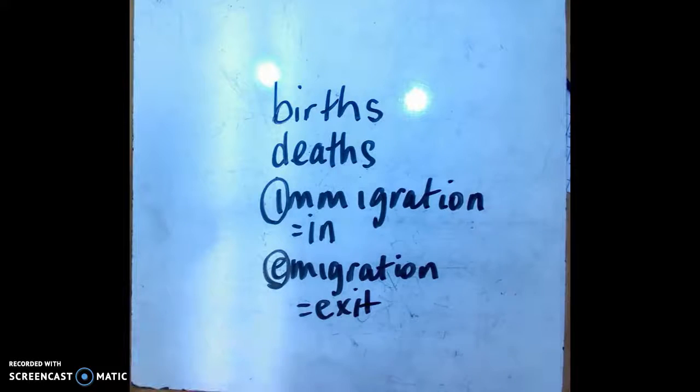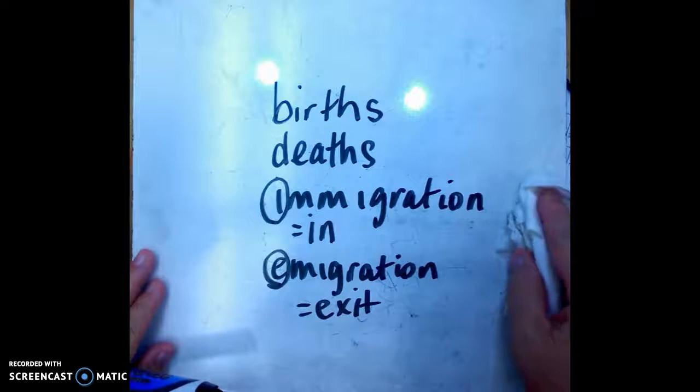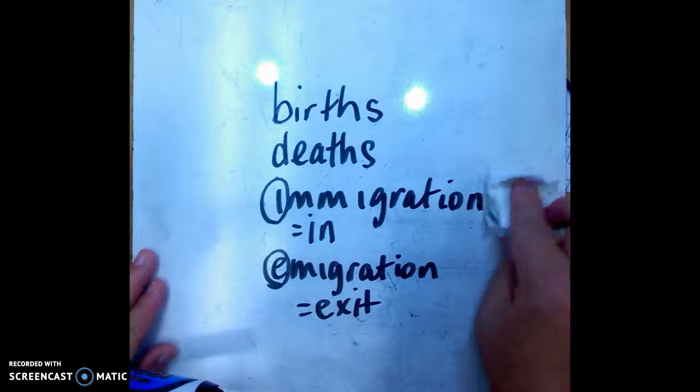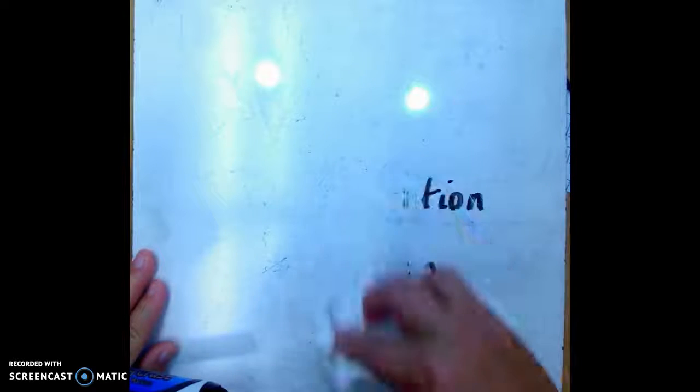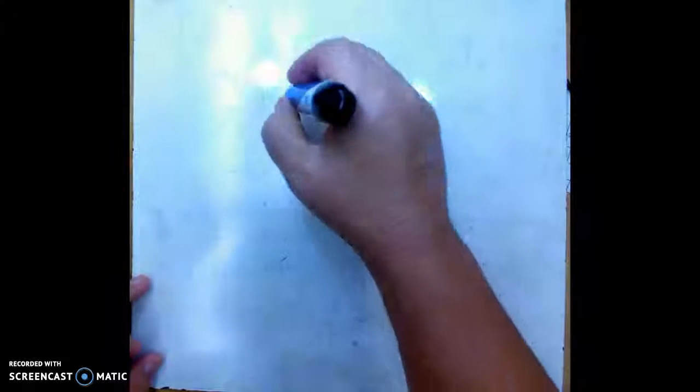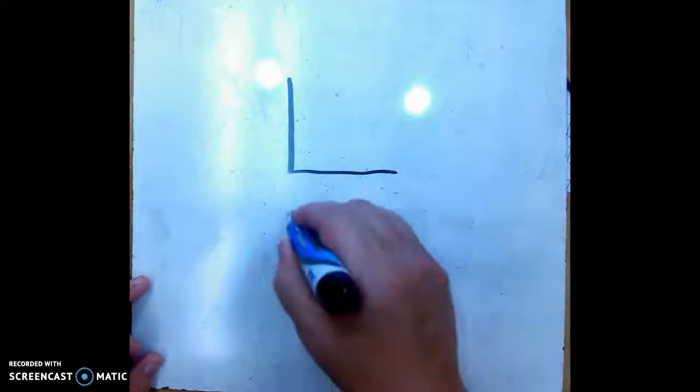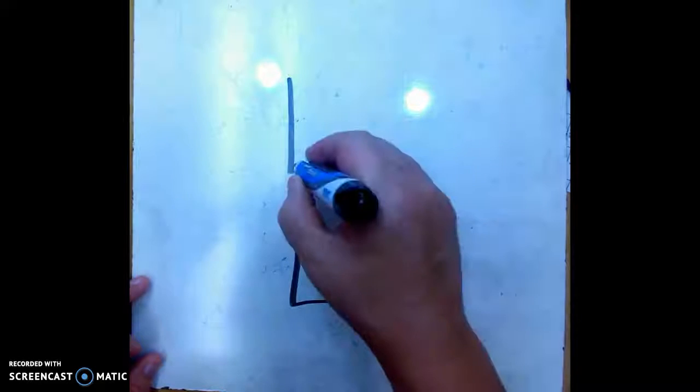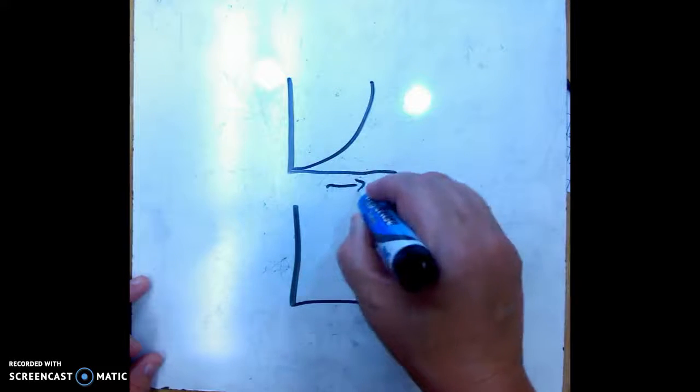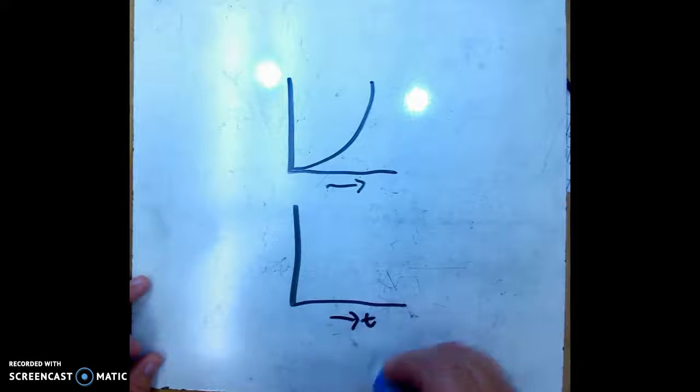So these are the four ways that populations are changed: births, deaths, immigration, and emigration. And then you need to know the difference between logistic growth and exponential growth.